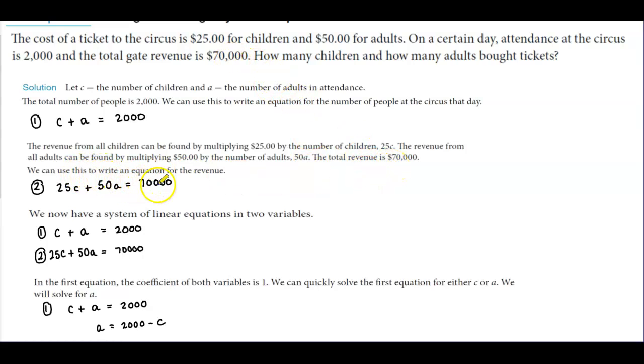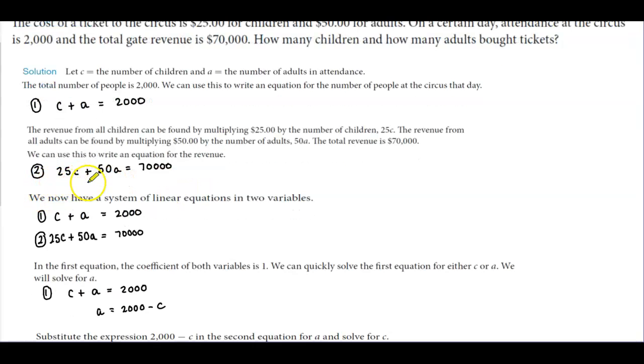Now we can use this to write an equation for the revenue. For number two, we have 25C + 50A = 70,000.